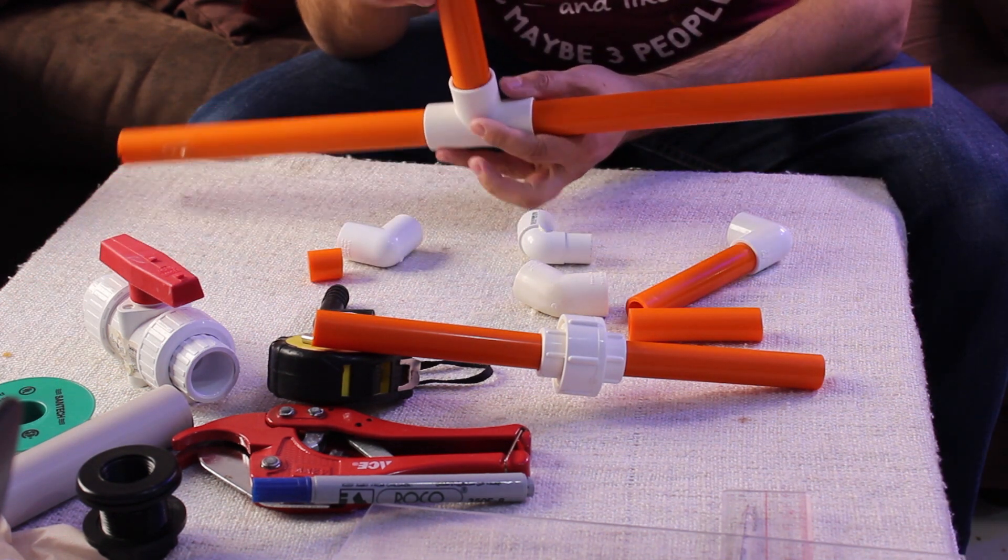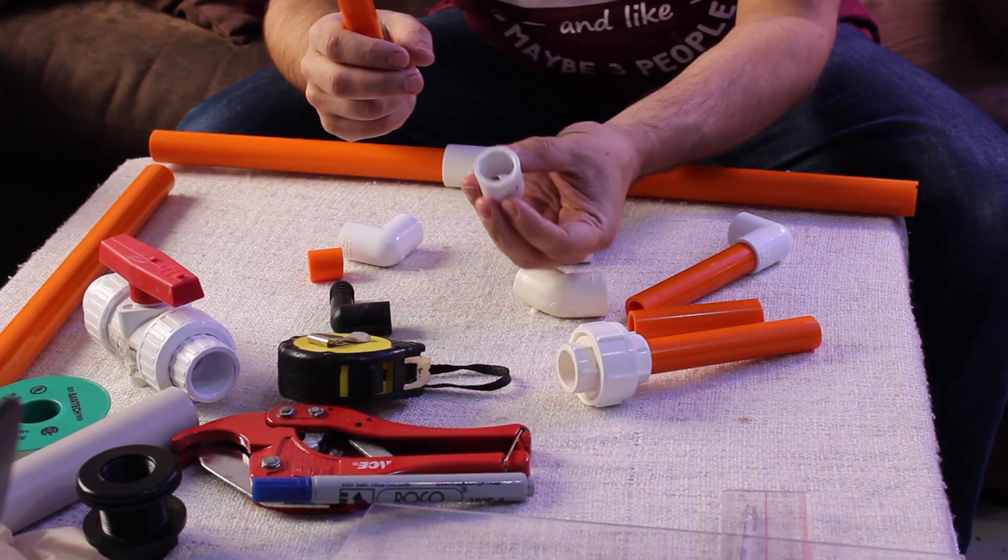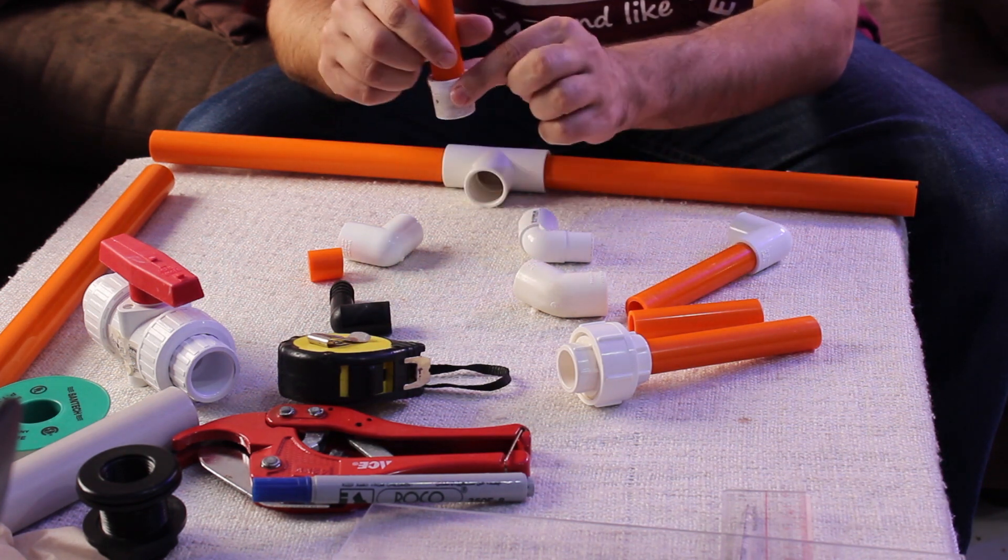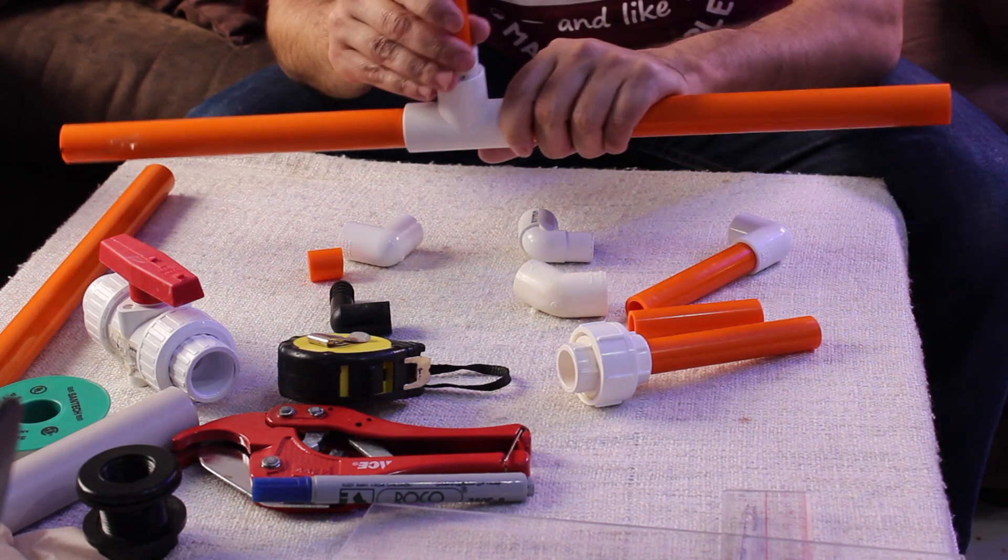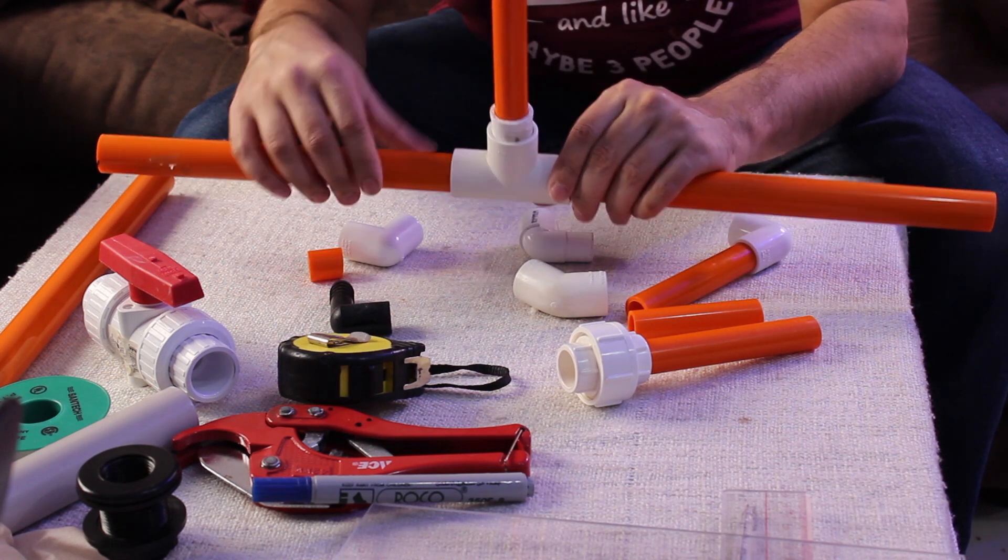The T-fitting can be used to split one line into two lines. Also, there is a bushing or reducing fitting. This can be used to change pipe sizes. I can change, for example, one inch to half inch by the use of this bushing fitting.